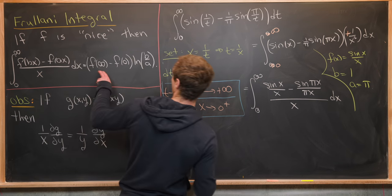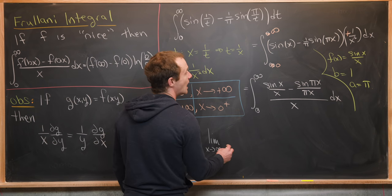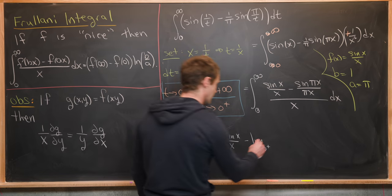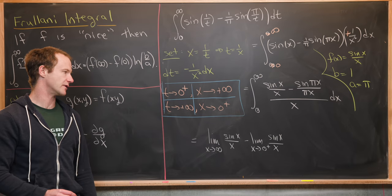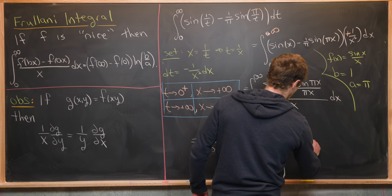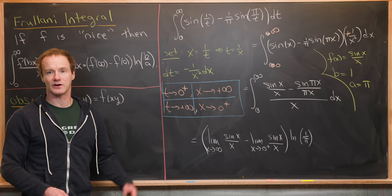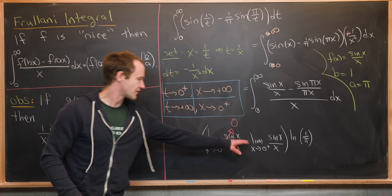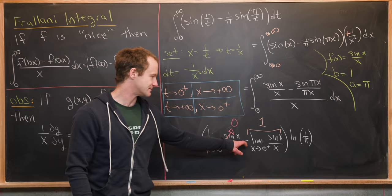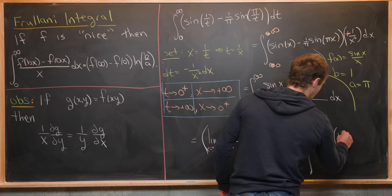The solution equals f(∞) minus f(0) times ln(b/a), rewritten using limits: the limit as x → ∞ of sin(x)/x minus the limit as x → 0⁺ of sin(x)/x, all times ln(1/π). Note f(0) is replaced by a limit due to the discontinuity there. The first limit is 0 since sin(x) is bounded and the denominator grows. The second limit equals 1. So the answer is 0 minus 1 times ln(1/π), which equals minus ln(1/π) = ln(π).